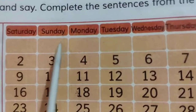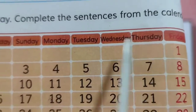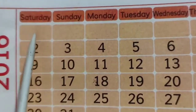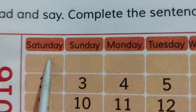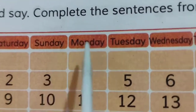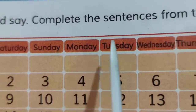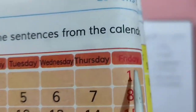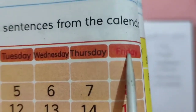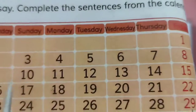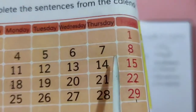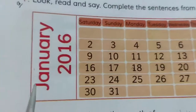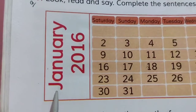This is a calendar page. The seven days of a week are given at the top of this page. Here we see Saturday, Sunday, Monday, Tuesday, Wednesday, Thursday and Friday.